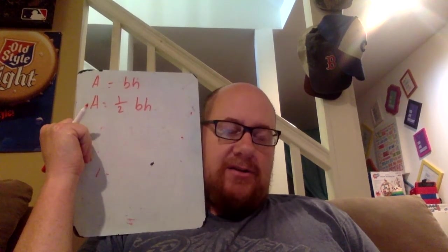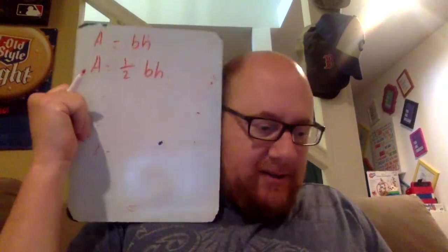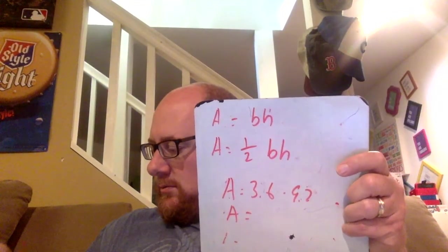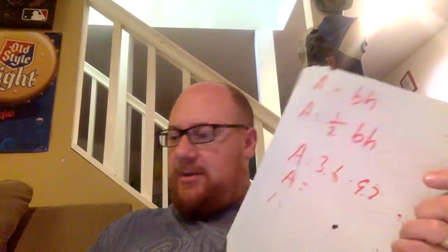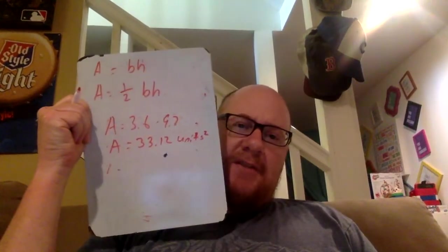If you look at the rectangle, let's start with that. We know base and height, 3.6 times 9.2. That area comes out to be, let me do the math here, so 3.6 times 9.2 equals 33.12 units squared. Okay, so just put that off to the side for now.